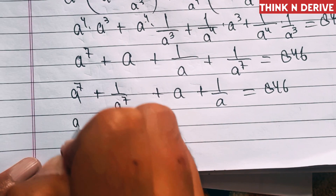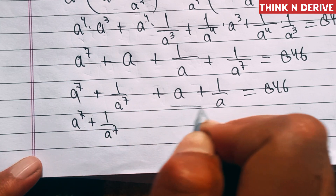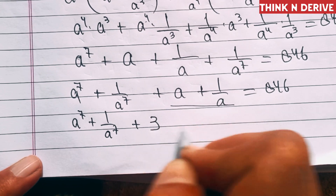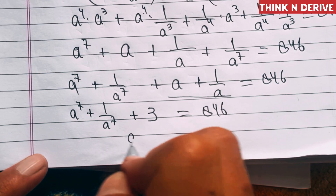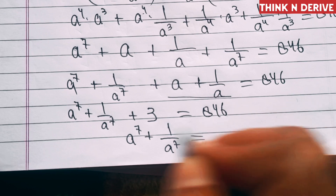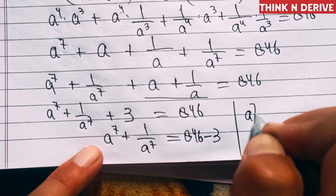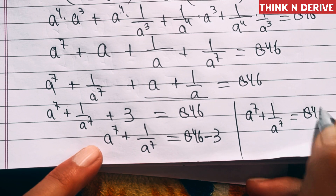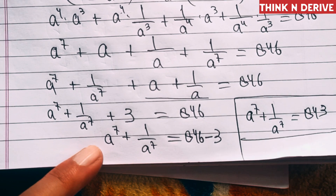Rearranging: a⁷ + 1/a⁷ + (a + 1/a) = 846. Since a + 1/a = 3, we have a⁷ + 1/a⁷ + 3 = 846. Therefore, a⁷ + 1/a⁷ = 846 - 3 = 843. This is the final answer. Thanks for watching.